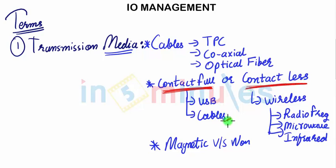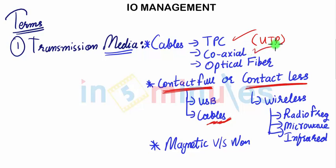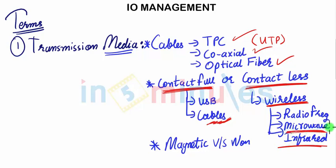In contactful we can have various cables: twisted pair cable, called TCP, out of which the generally used one for LAN is UTP — unshielded twisted pair. Then coaxial cable, which is traditionally used for data transmission, and optical fiber, which uses light to transfer data. In contactless wireless, we have infrared used in remotes, microwave used in satellite communication, and radio frequencies used in most wireless communication including cellular.